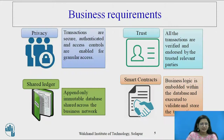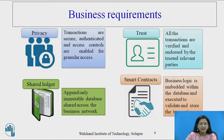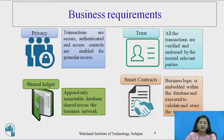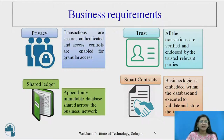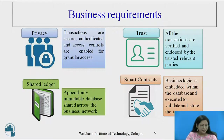What are the business requirements? Privacy, trust, smart contracts, and shared ledger. Transactions are secure, authenticated, and access controls are enabled for granular access only — that is privacy. All transactions are verified and endorsed by trusted relevant parties — that is trust. Business logic is embedded within the database and executed to validate and store the transaction — that is smart contracts. And shared ledger: an append-only immutable database shared across the business network. These four are the business requirements.